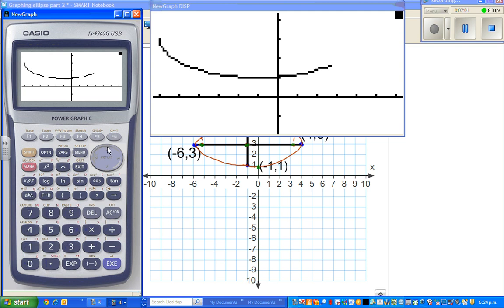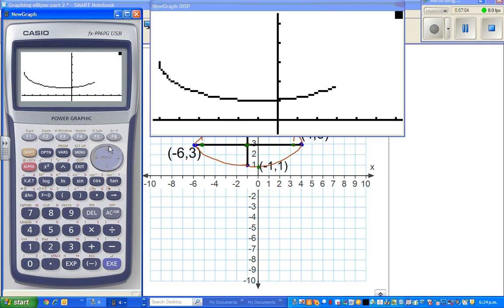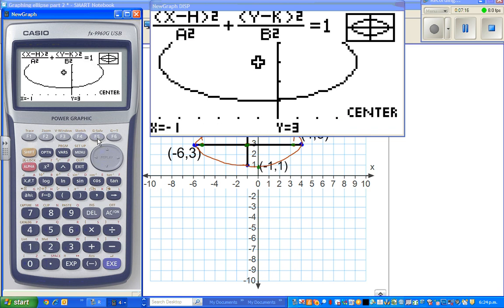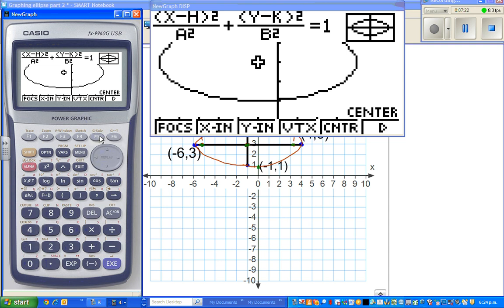Here we go, so this is the ellipse, and you can match this with this. So we'll check all the values. So first we'll start with the center. Center is negative 1, 3. Again, that's solved. The next is, we'll find the focus, or let us look at the vertices.